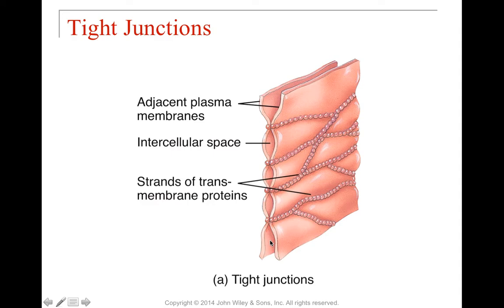Tight junctions are going to keep water from going across — they're going to be watertight. This is very important in areas like your bladder, for example. You can picture this like a vacuum sealer: a bunch of tiny dots holding cells together by tiny plasma membrane proteins. These transmembrane proteins make the junction watertight. Tight junctions are found anywhere you have to hold liquid, and the bladder is a very good example.